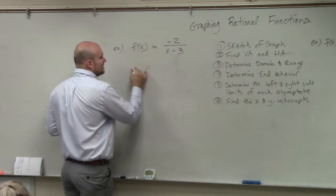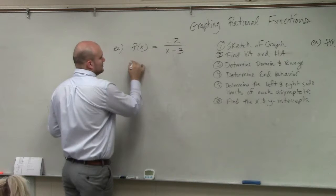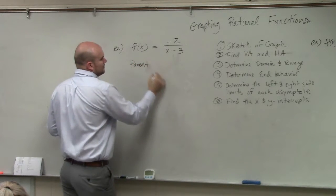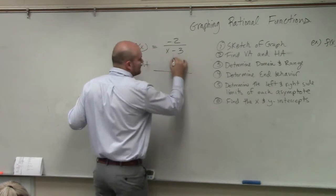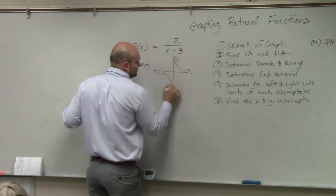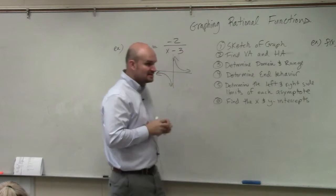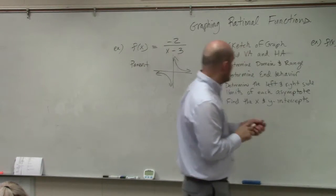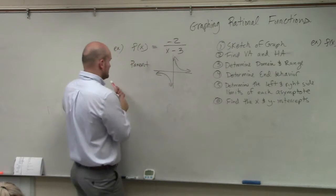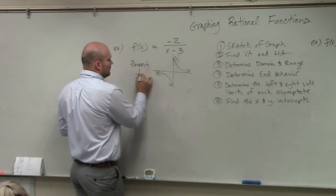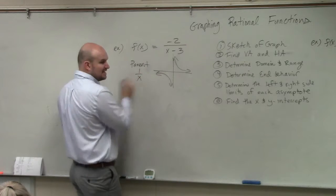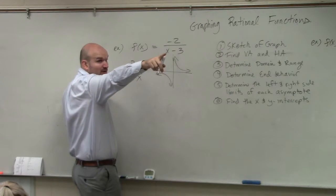So let's just look at the parent graph. Parent graph looks like this. Now, on this parent graph, you can see there's a couple changes. Parent graph of 1 over x looks like that. It's written right up there on the board, on the wall.